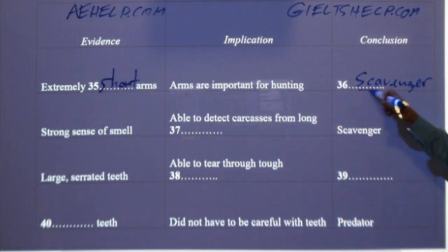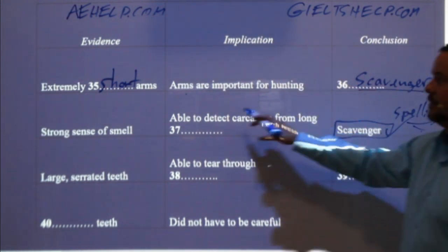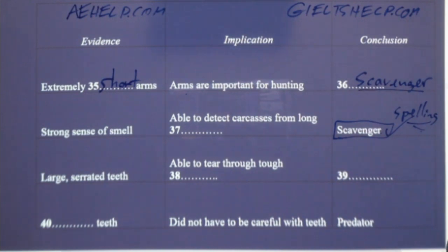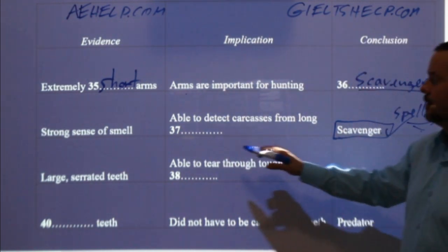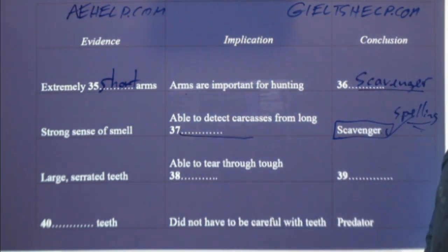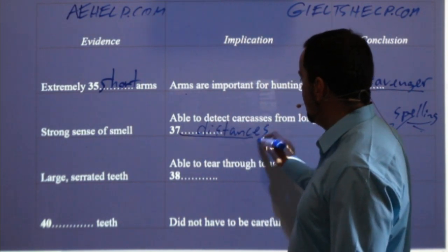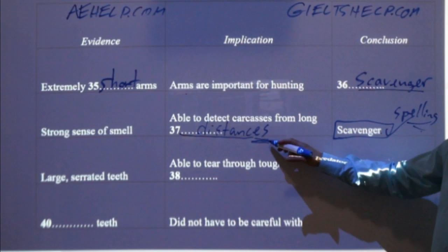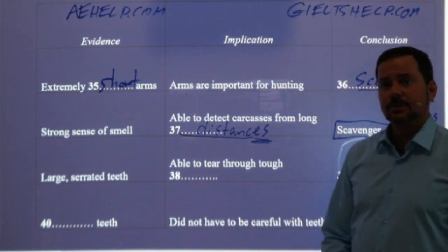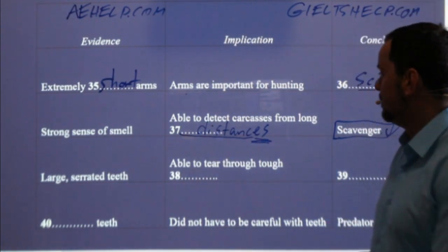Students, when the answer is given to you, please make sure the spelling is the same. Don't make a silly mistake and lose a mark. So arms are important for hunting — if we have short arms, we're probably just looking for food. Strong sense of smell — able to detect carcasses from long 37. What is it? It's distances. Interestingly, here we use the plural — not 'long distance' but 'long distances.' You can actually count distance, so you can have multiple distances. And when you have a C, you'll have that E. Distances.